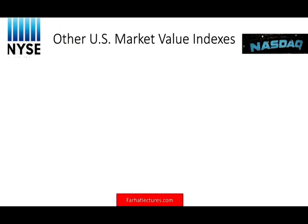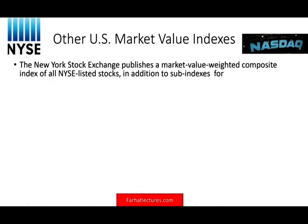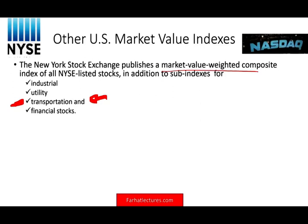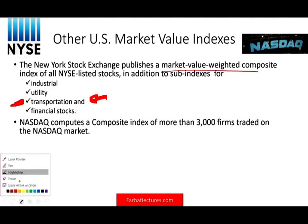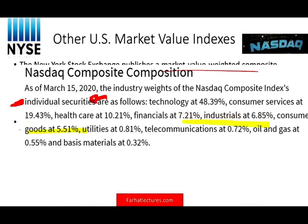Other US market value indexes include the NYSE and the NASDAQ. The NYSE — New York Stock Exchange — publishes a market value weighted composite, the same concept. In addition, it has sub-components for industrial, utilities, transportation, and financial stocks. The transportation index of the NYSE is highly looked at to know what's going on in the economy — it's a major indicator when the transportation index is slowing down. NASDAQ is also a very important index — it computes the index of more than 3,000 firms traded on the NASDAQ. As of March 2020, the NASDAQ included about 48% technology, 14–20% consumer, healthcare, financials, and industrial. The point is it's dominated by technology companies — when you think about the NASDAQ, think of technology, about half of it is in technology.